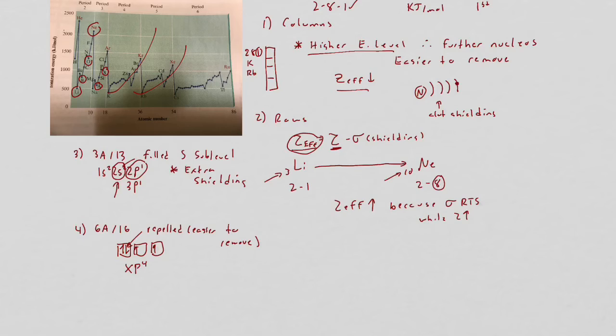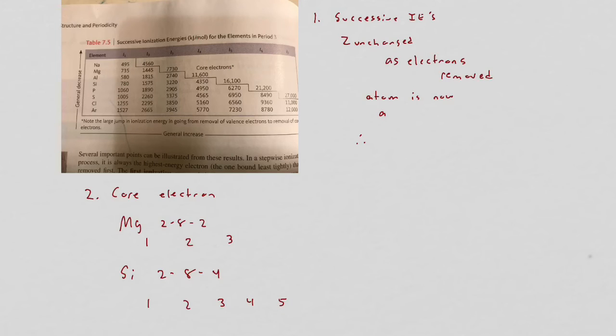Let's go to successive ionization energy. Successive ionization energy deals with the second or third or fourth electron. Make sure we're clear: since we're dealing with a single atom, Z itself is not really changing. However, there is a change here.